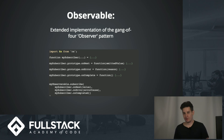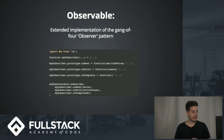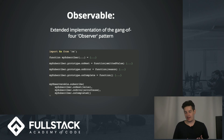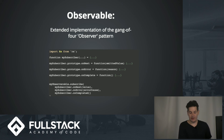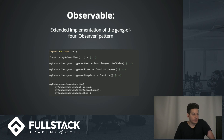In terms of what the observable is — it's an object. It's an implementation of the Gang of Four observer pattern. It's basically storing callbacks, kind of like the Redux store does for all of its subscribers. The observable stores callback functions for its subscribers.